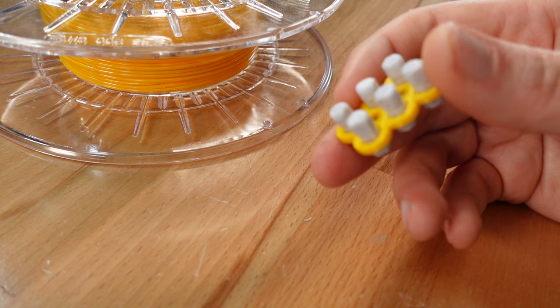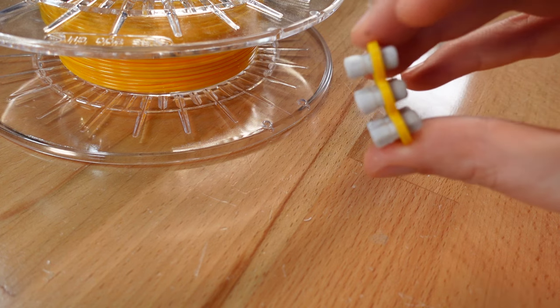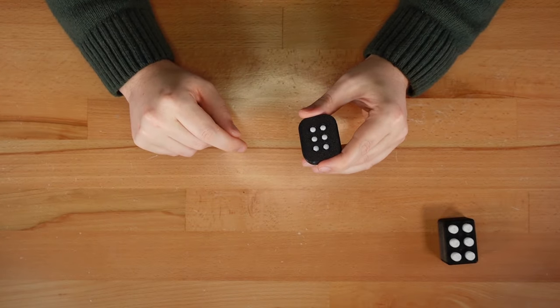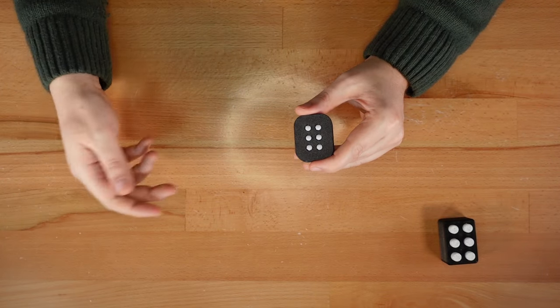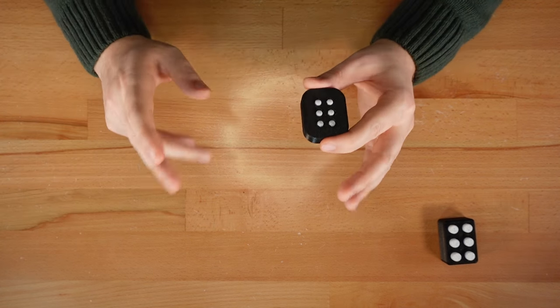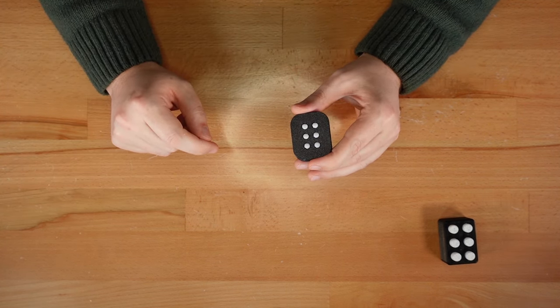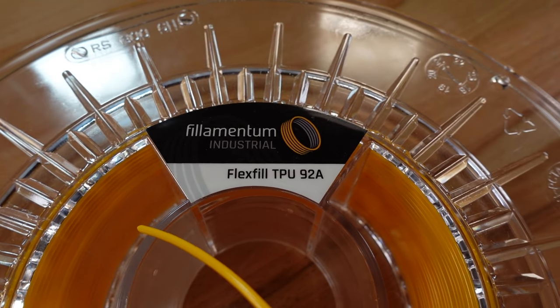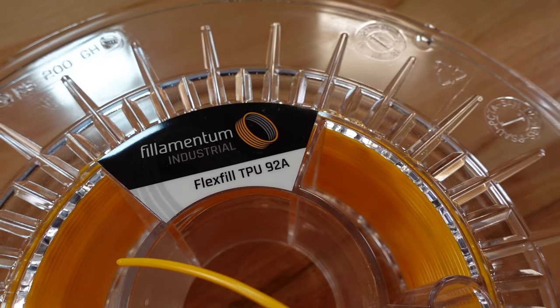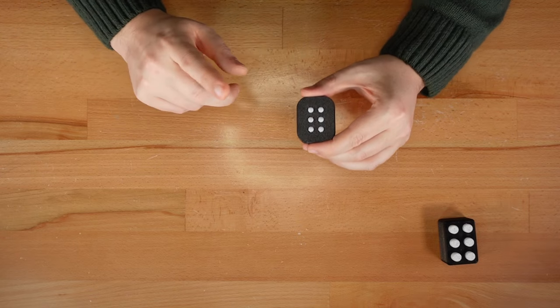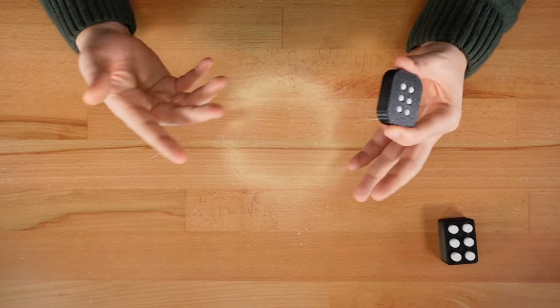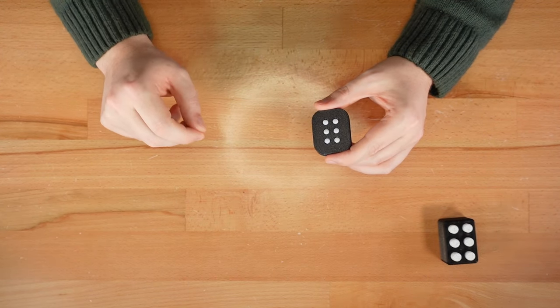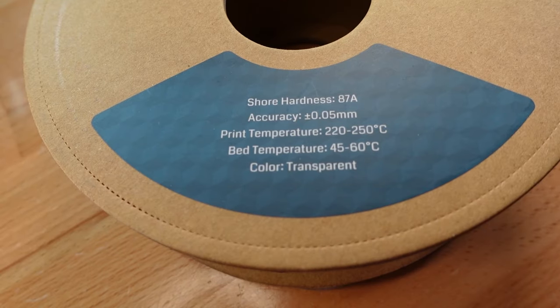This braille cell uses 92a TPU by filamentum. The 92 refers to its shore A hardness. The higher the number, the more stiff you can expect the buttons to feel. Some manufacturers include this value on the filament spool or packaging, but many others don't list it at all. So if you plan on printing this design, look for filaments that are explicitly labeled 92a or even softer.